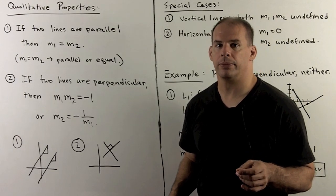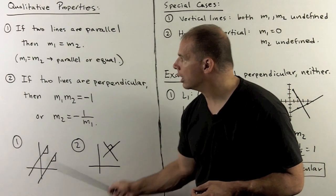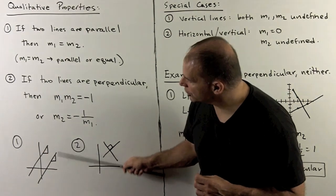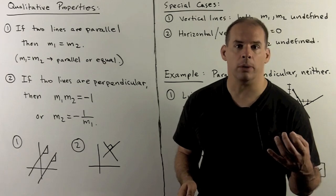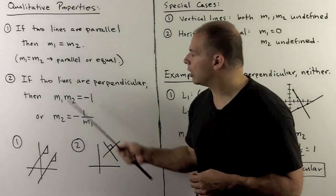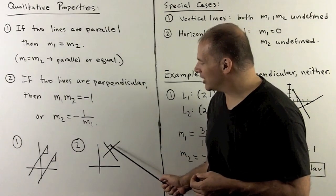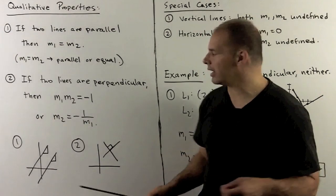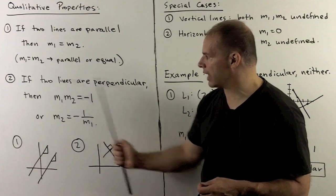More qualitative properties of slope: if two lines are parallel — meaning they never intersect — then their slopes are equal. Looking at rise over one, if slopes are equal then the lines are either parallel or the same line. On the other hand, if two lines are perpendicular — intersecting in exactly one point at a 90-degree angle — then the product of the slopes equals minus 1. Equivalently, m2 equals minus 1 over m1, which is another way to test whether lines are perpendicular.